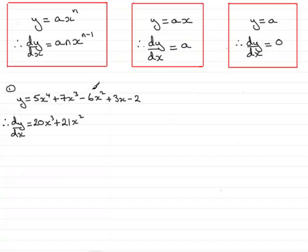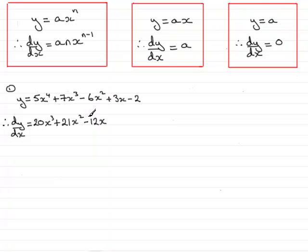For the third term, again it's the same form, but you have to be careful — don't rush in and write a plus, because this is minus 6. So 2 times minus 6 is minus 12. We reduce the power of x by 1, so that's x to the power 1. When you have x to the power 1, it's a bit silly to write that 1 in, so we just write it as x — giving minus 12x.